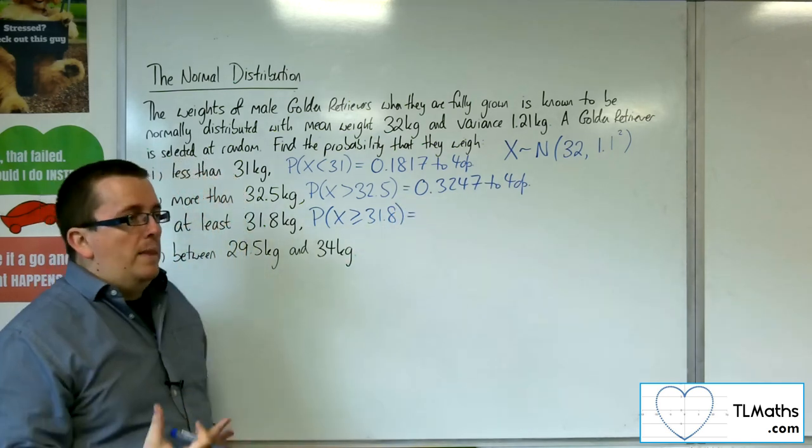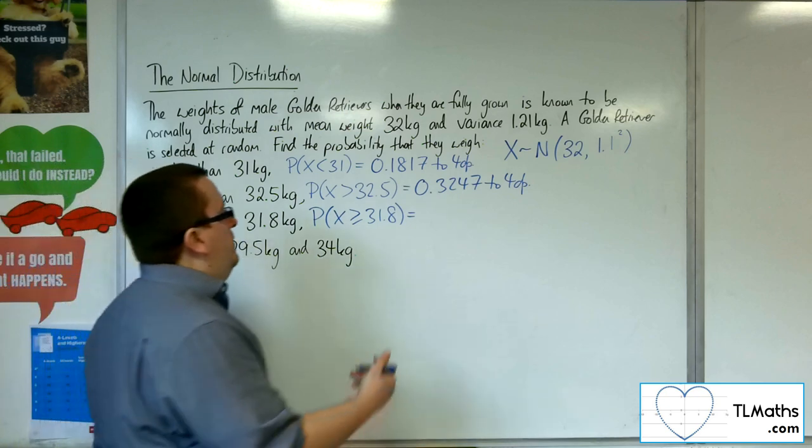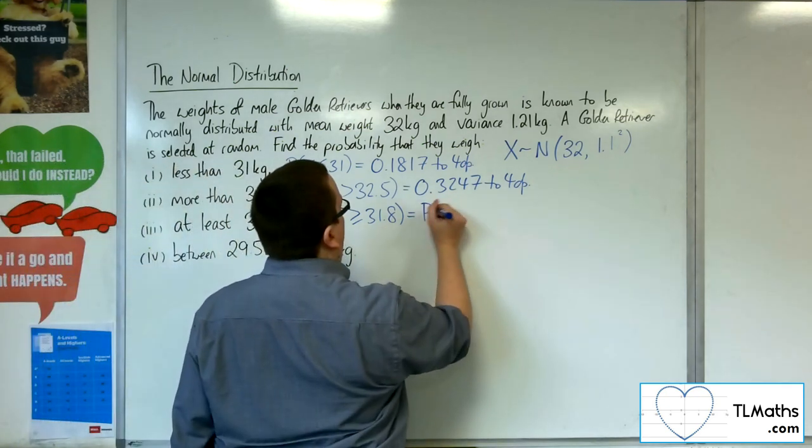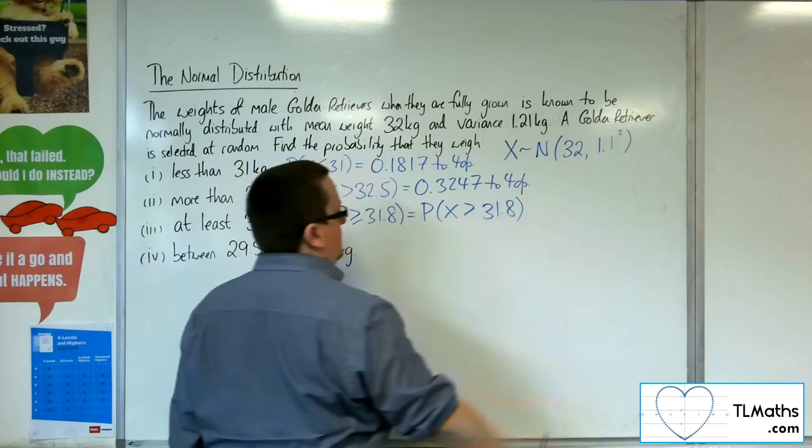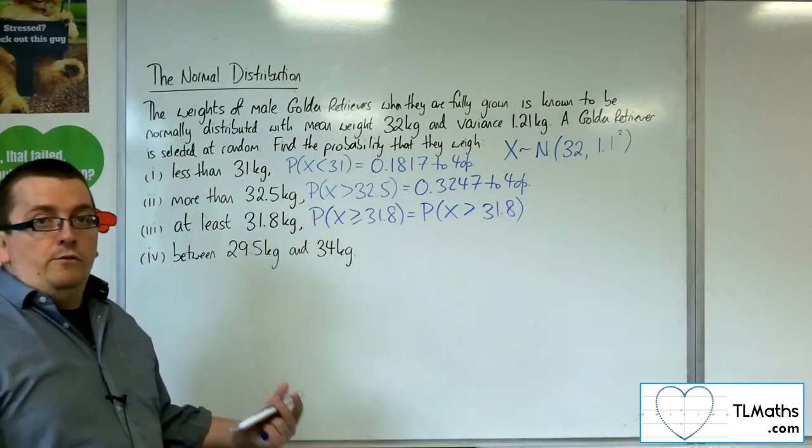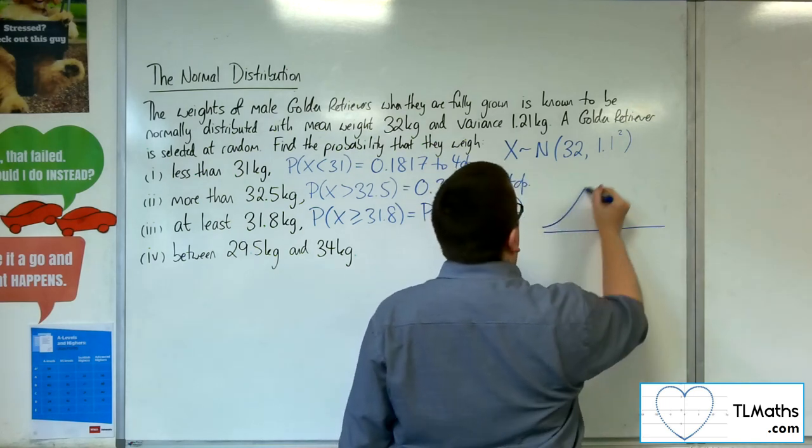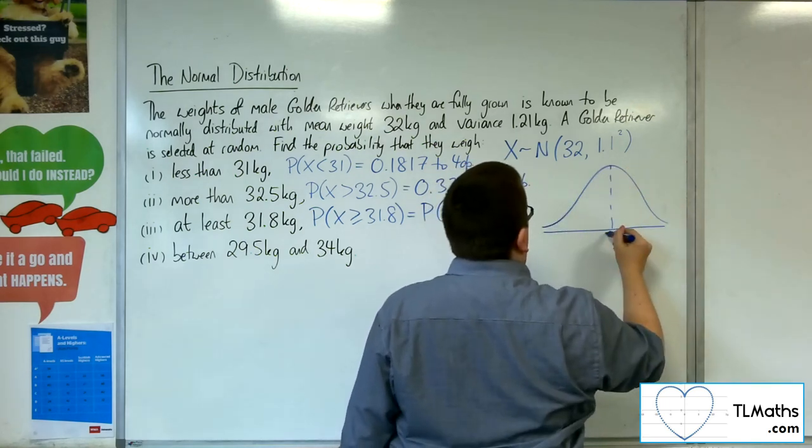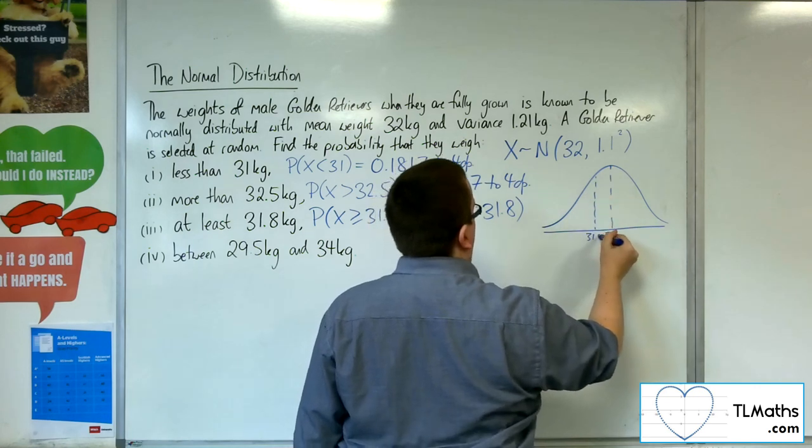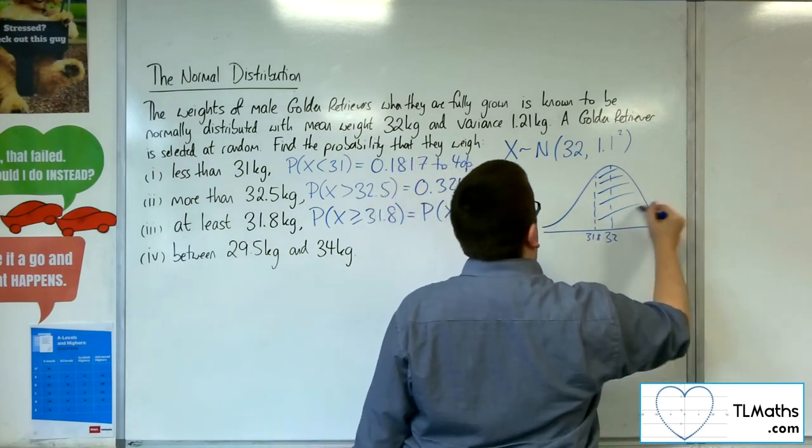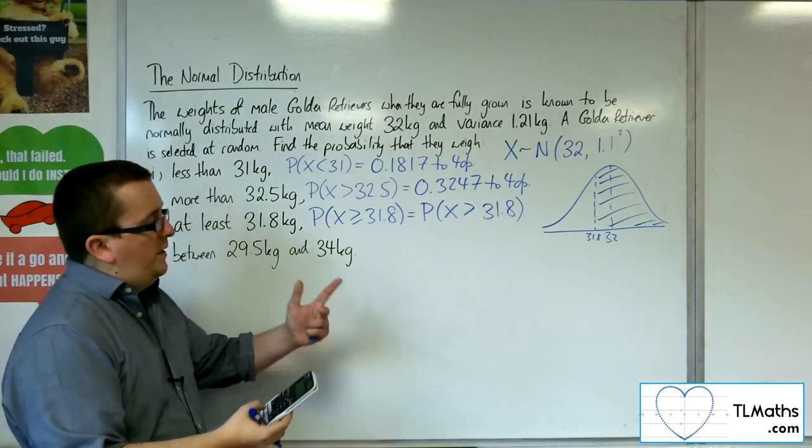But remember that the probability of X being equal to 31.8 is 0. So this is actually precisely the same probability as finding greater than 31.8. So for normal distribution, that won't make any difference. So there's 32, 31.8.